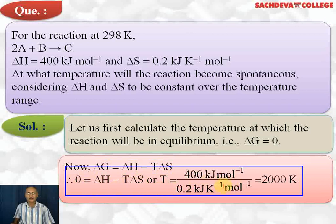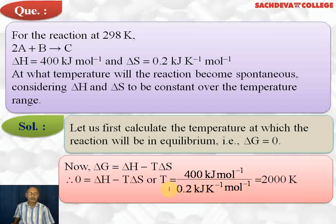Setting delta G = 0, we get T = delta H / delta S = 400 / 0.2 = 2000 K. Be careful that both delta H and delta S are in the same units. At 2000 K the reaction is in equilibrium. Above 2000 K, delta G becomes negative and the reaction becomes spontaneous; below 2000 K, the reaction is non-spontaneous.